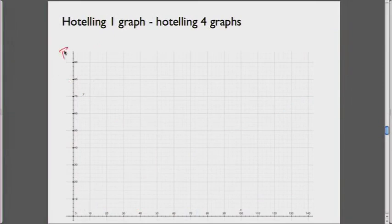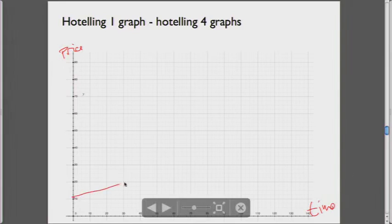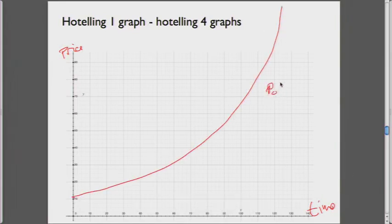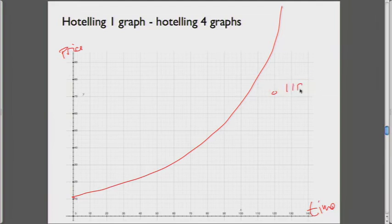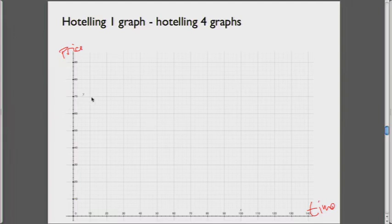The Hotelling rule: we have price on one axis and time on the other. The basic Hotelling result is that price is going to go up with time — price at time 0 grows at the rate of (1 + interest rate) over time. This is about owning a mine or a nonrenewable resource. The value of that resource is going to go up over time.